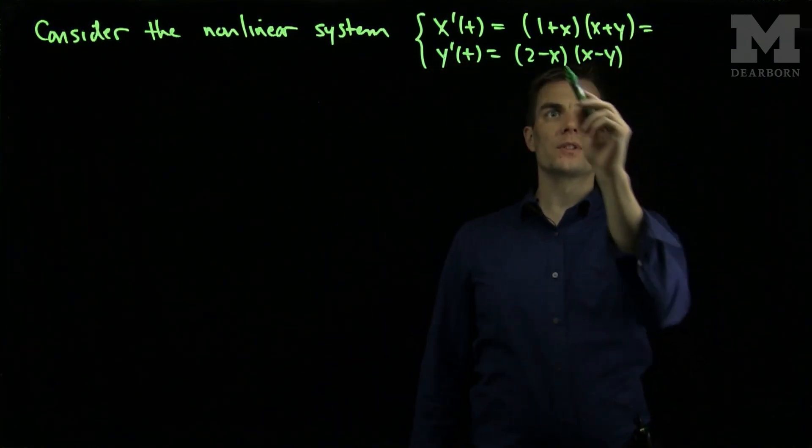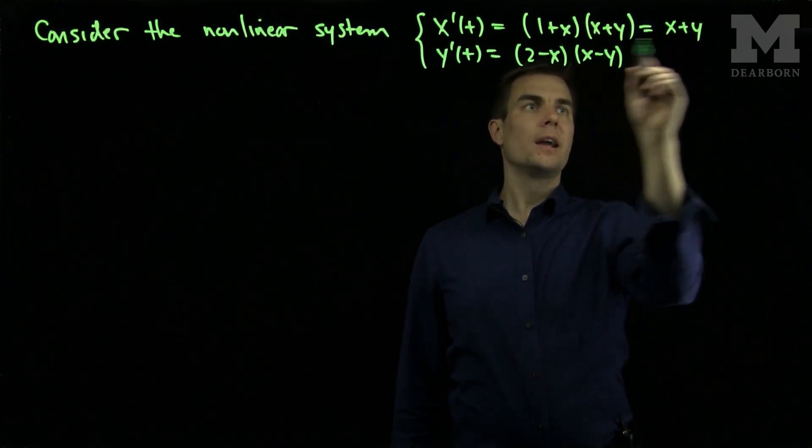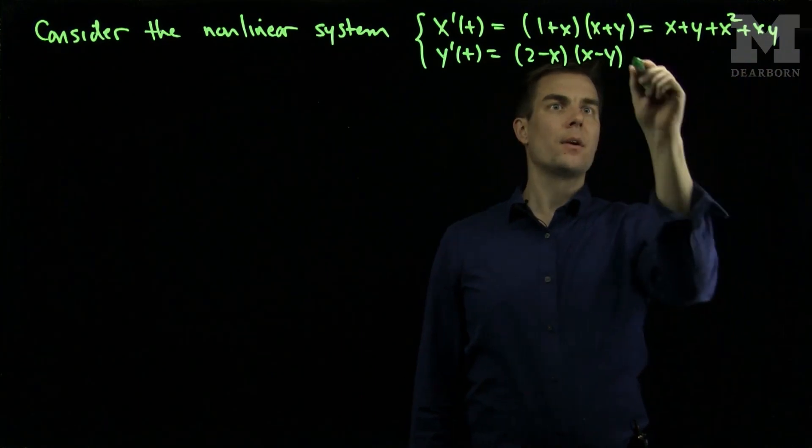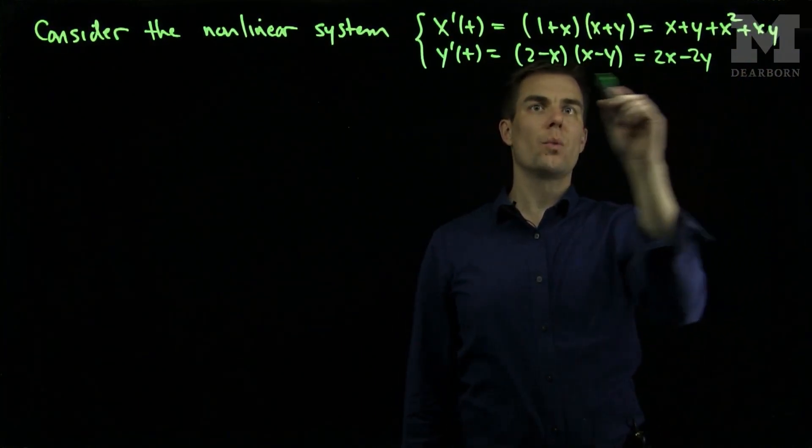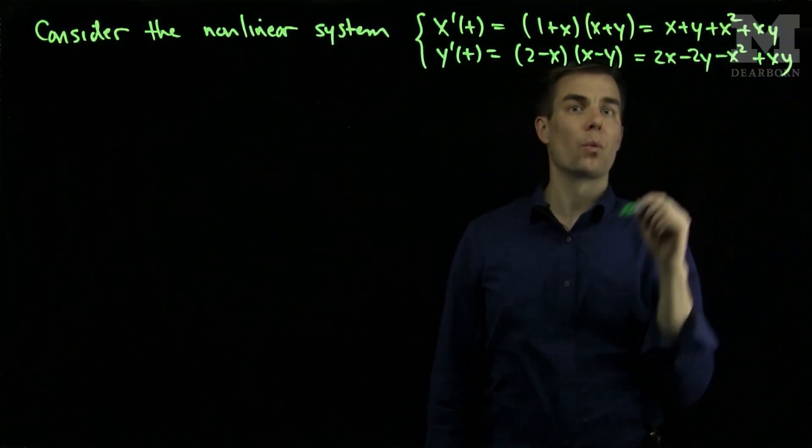Now we can FOIL these out to simplify a little bit. I'll have x plus y and x squared and xy. Over here, I will have 2x minus 2y, a negative x squared, and a positive xy.